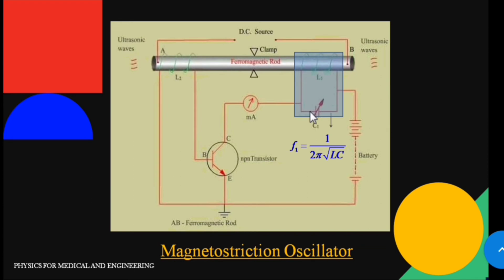An alternating EMF is produced due to the vibration of the tank circuit. This alternating EMF induces an alternating magnetic field, and due to this magnetic field, the length of the rod gets changed. This change in the length of the ferromagnetic rod induces an EMF in coil L2.